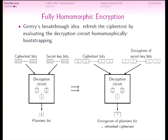To get a fully homomorphic scheme, Gentry discovered the idea of refreshing the ciphertext — reducing the noise by evaluating the decryption circuit homomorphically. This is called bootstrapping. The regular decryption circuit takes as inputs the secret key bits and the bits of the ciphertext, with a sequence of XOR gates and AND gates, eventually outputting the plaintext bits.